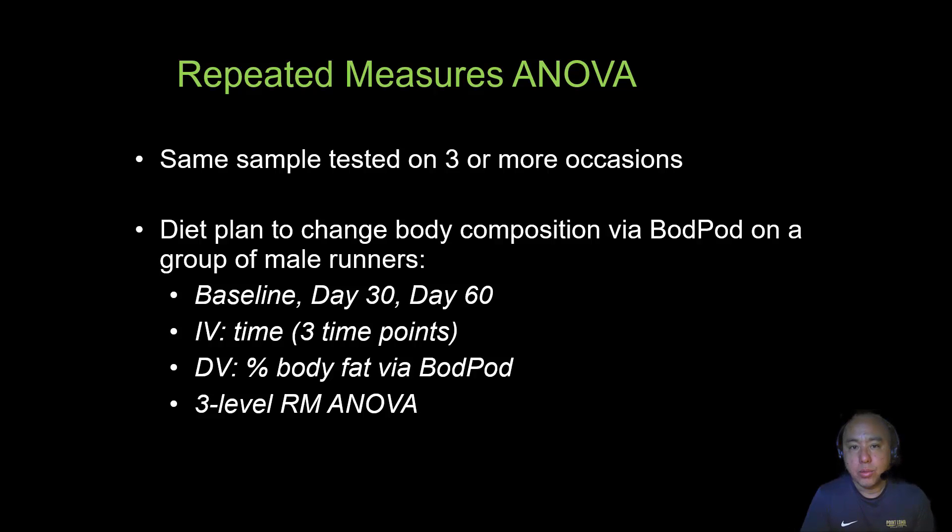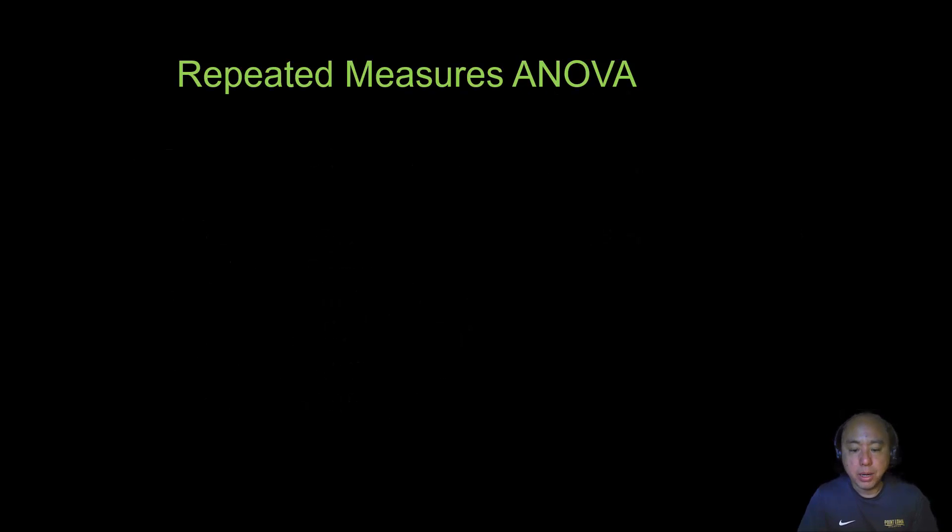Let's give one example here. Researchers are interested in a certain diet plan and want to know what the change in body composition is measured using a BodPod throughout a few weeks or throughout 60 days. So this is a group of male runners. They were tested using BodPod on day one, day 30, and day 60. So in this case, the one independent variable is time, three time points. That's known as a three-level repeated measures ANOVA. It's an analysis of variance to determine the effect of time on the dependent variable, which happens to be percentage of body fat using BodPod.